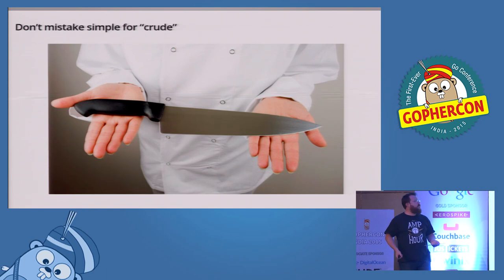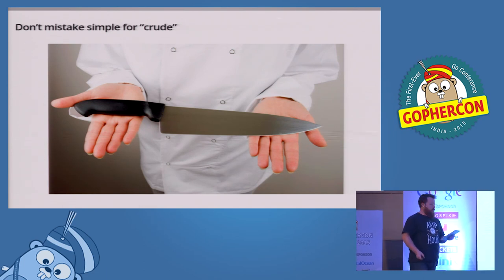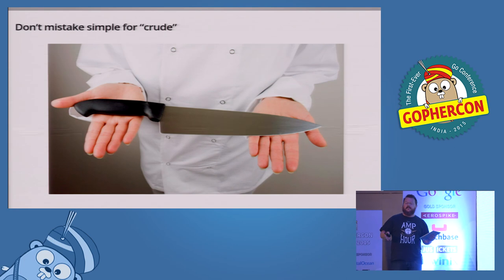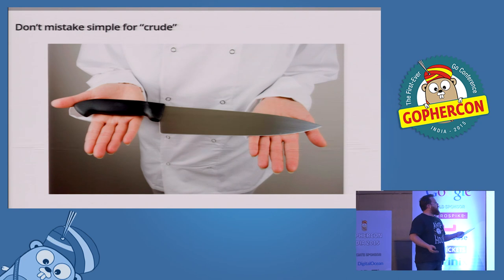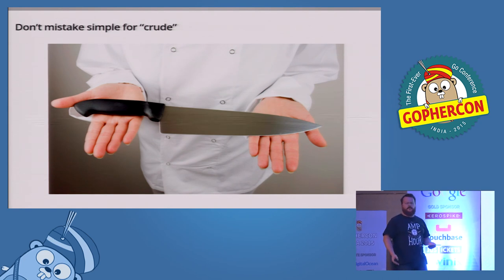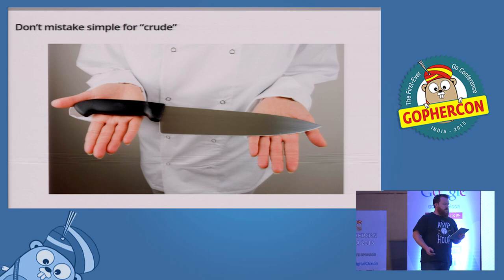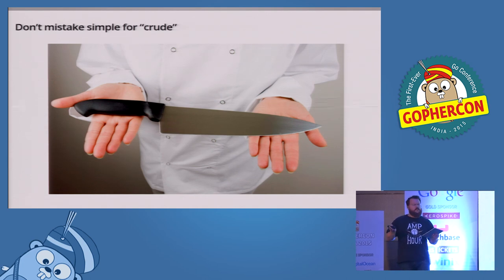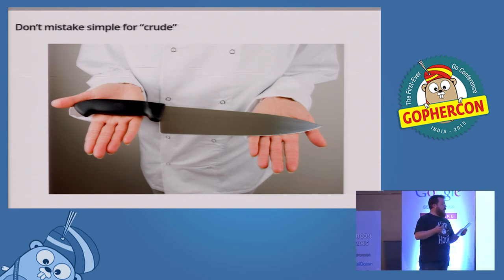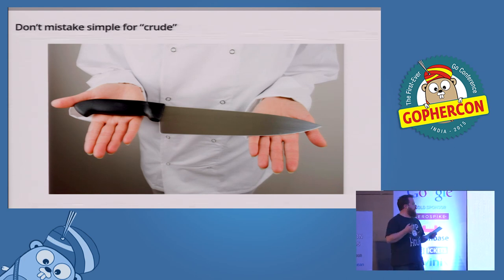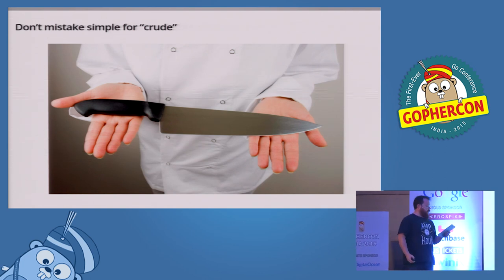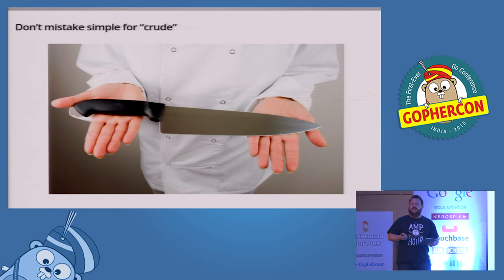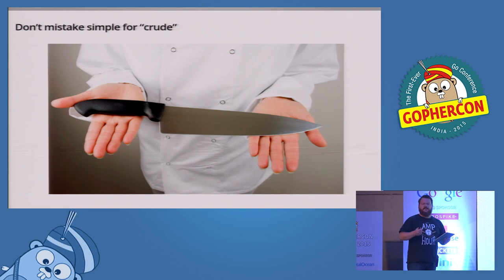Just because something is simple, we shouldn't assume it's crude. While lasers are amazing technology used in manufacturing and medicine, when you prepare food, you just use a knife. And compared to lasers, a chef's knife might be unsophisticated. But in truth, they represent generations of knowledge in metallurgy, in manufacturing, even in usability — the handle. So when considering a programming language, don't mistake a lack of the latest features for a lack of sophistication.